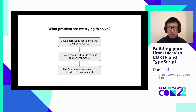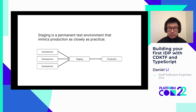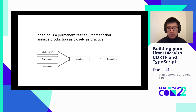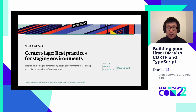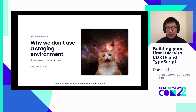But an IDP is not the only solution. Let's explore a more established solution: having a staging environment as the test environment. Staging is a permanent test environment that mimics production as closely as practical. It is meant to provide a realistic environment to test before deploying to production. The promise of staging is that it will reduce the number of production issues, and when implemented properly, staging does live up to its promise. But many teams do not follow best practices, and what we end up with are situations where engineering teams get rid of staging altogether.